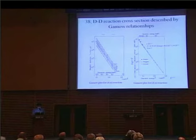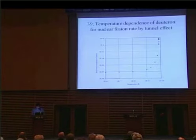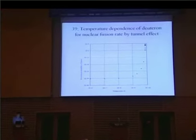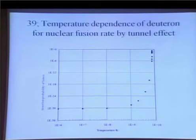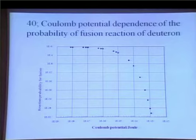The left graph shows neutron generation by a D-D reaction in the hydride. The right graph shows the D-D cross-section represented by the Gamow relationship, and we can estimate the reaction probability for our test. This figure shows the nuclear reaction probability for hydrogen as a function of temperature, increasing above 10⁹ Kelvin. The calculation of tunneling probability for the change of the Coulomb potential for the proton is shown. As for reaction probability by the tunnel effect, if the barrier potential decreases by only 50%, the probability increases by 10 orders of magnitude.